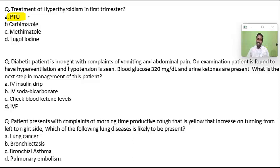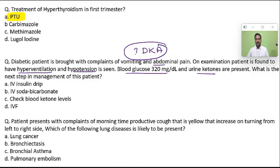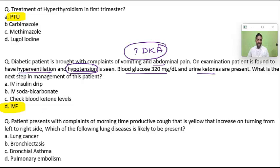A diabetic patient was brought with complaints of vomiting, abdominal pain, hyperventilation, hypotension, high blood glucose, and ketones — all suggestive of diabetic ketoacidosis (DKA). The hyperventilation is the classical Kussmaul's breathing. The next step in DKA: most important is IV fluids and insulin drip. Since the patient is hypotensive, in an emergency always give IV fluids — especially normal saline.